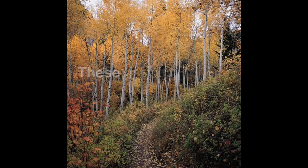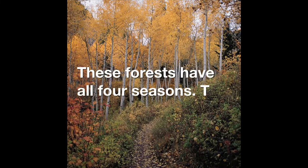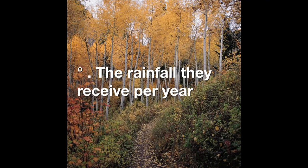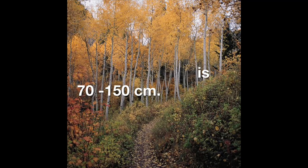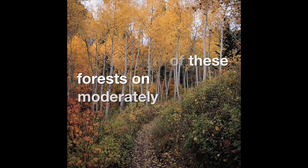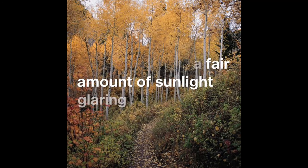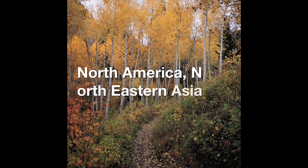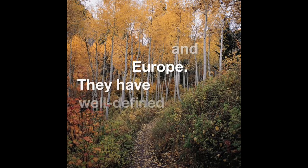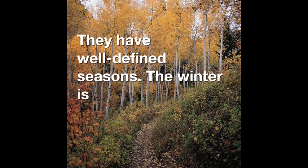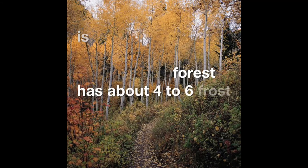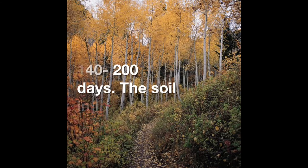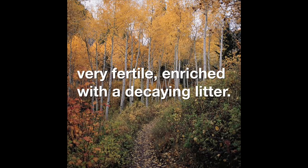Temperate forests have all four seasons. Temperature varies from minus 30 degrees to 30 degrees. The rainfall they receive per year is 70 to 150 centimetres. The canopy of these forests is moderately thick and murky, with a fair amount of sunlight glaring through. These forests are found in eastern North America, northeastern Asia, and western and central Europe. They have well-defined seasons and the winter is distinct. Temperate forests have about 4 to 6 frost-free months and a growing season of 140 to 200 days. The soil in these forests is very fertile, enriched with decaying litter.